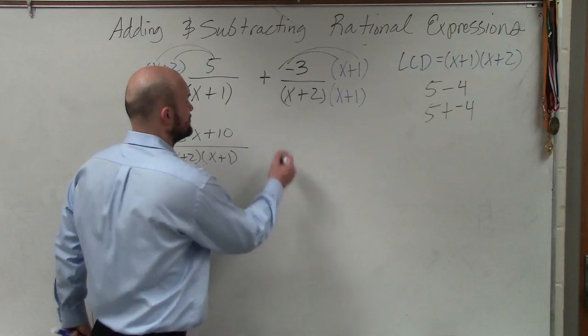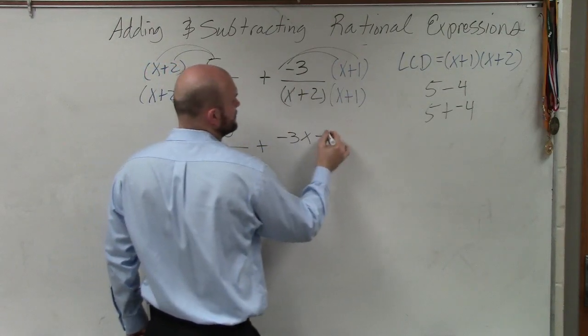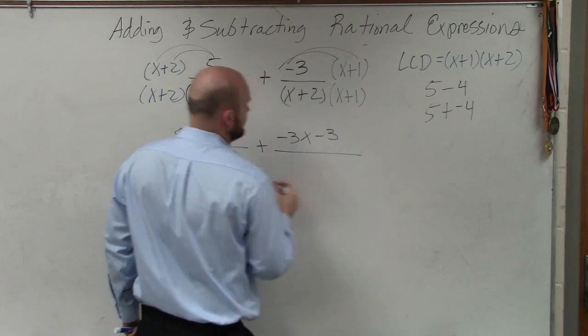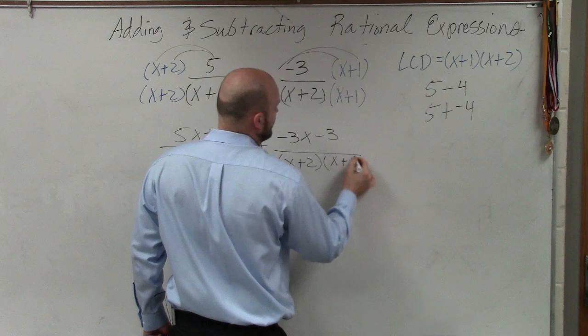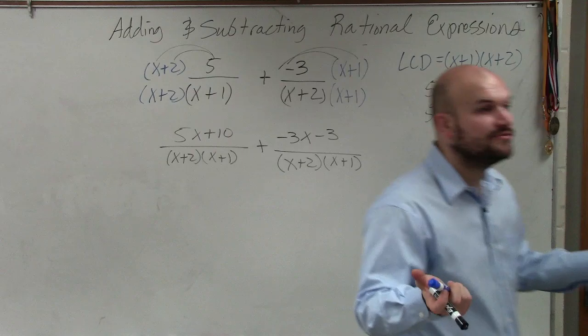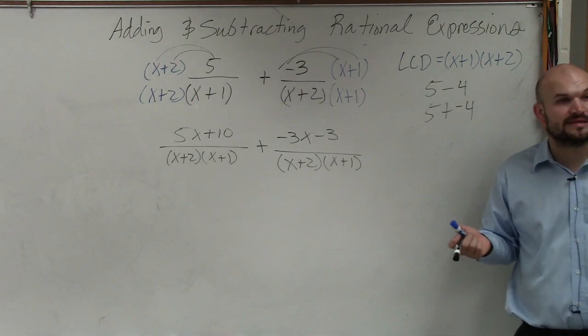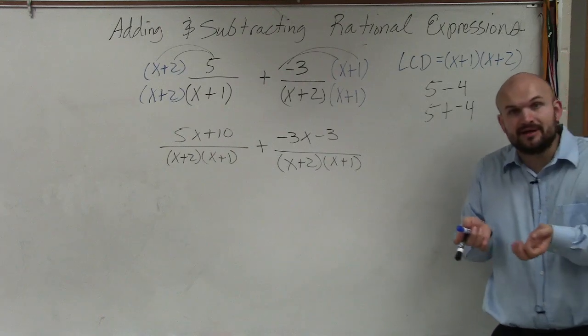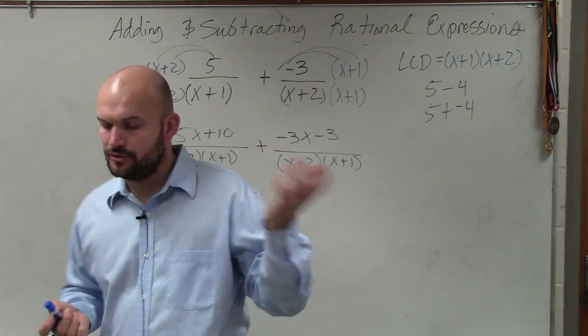So it's negative 3 times x, which is negative 3x, and negative 3 times 1, which is negative 3. Therefore, now I have x plus 2 times x plus 1. So what I want you guys to understand and see here is now I'm adding two fractions with the same denominator. And when you add two fractions with the same denominator, you keep the denominator, but you just add the terms in the numerator.